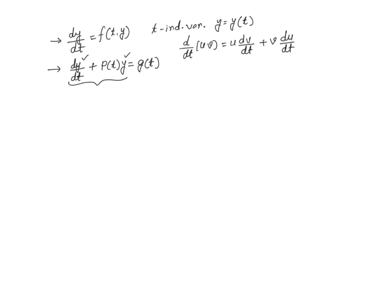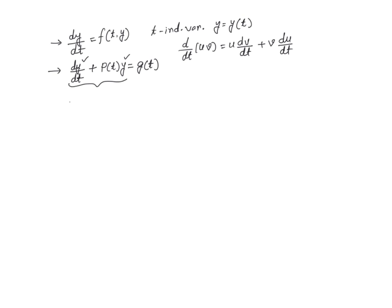Could we think of a function that we could multiply this equation by so that the left-hand side becomes the derivative of a product? So let's call it μ(t). Let's assume that some function μ(t) exists, and if we multiply both sides of this equation by μ(t), it's going to become the derivative with respect to t of μ(t)·y(t).